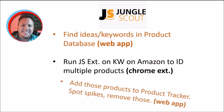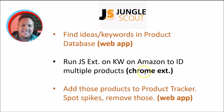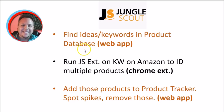Using the Chrome extension, you want to identify multiple products. Then, once you've done that, add those products to the product tracker, which is within the web app. This helps you spot spikes in these products so you can remove temporary trends.